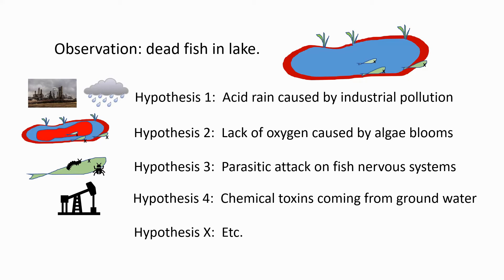And they call for different tests. For example, hypothesis two predicts there should be a lack of oxygen in the water, there should be a lot of algae in the water, and furthermore, if the level of algae is decreased, the health of the fish should improve. This is clearly a completely different explanation for the problem, and it indicates we have to do entirely different kinds of tests to evaluate the hypothesis.